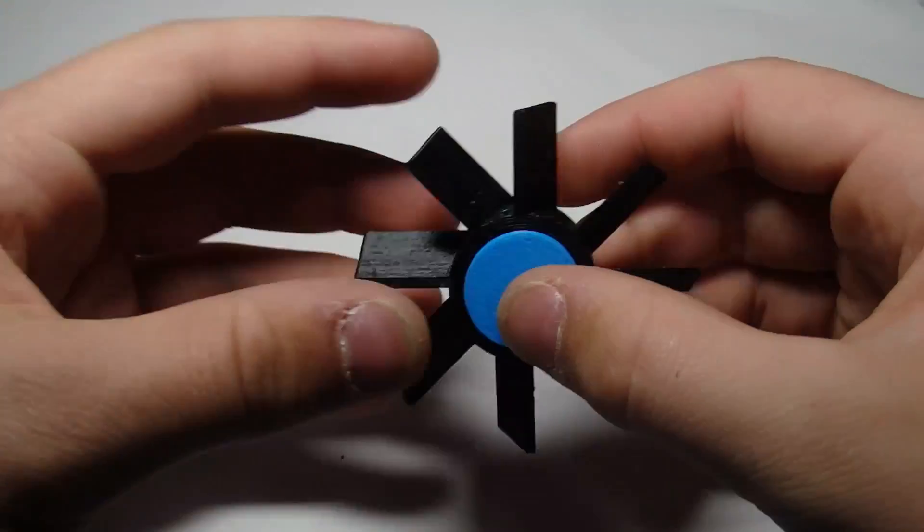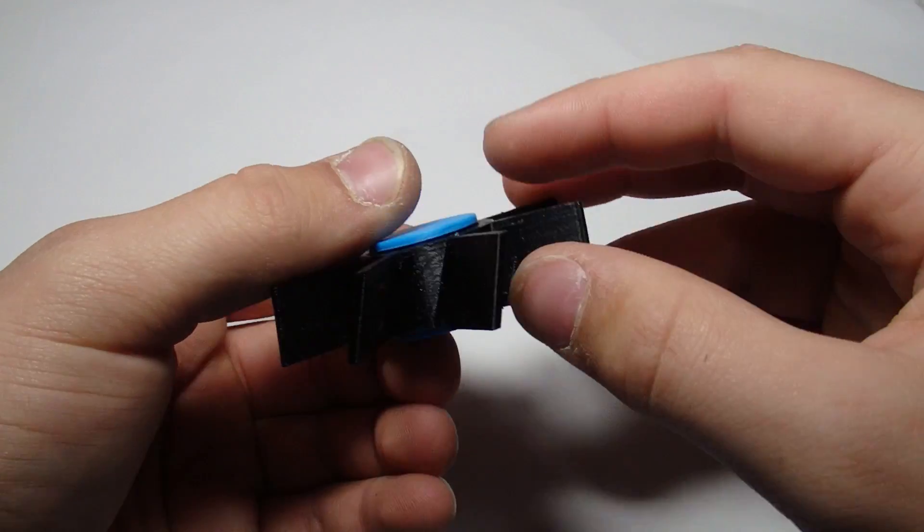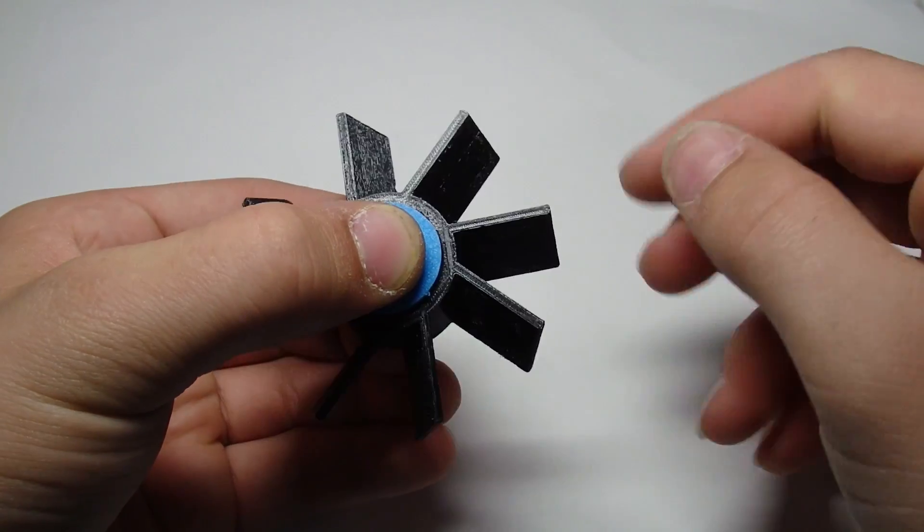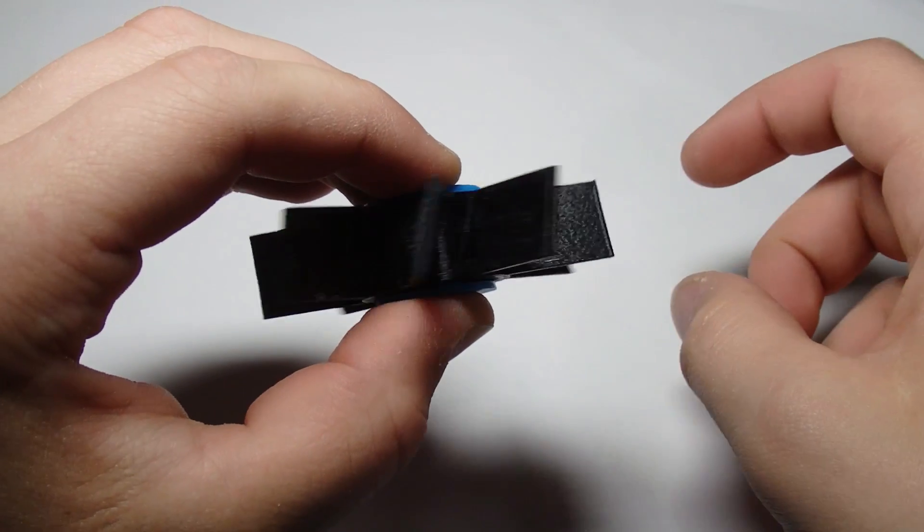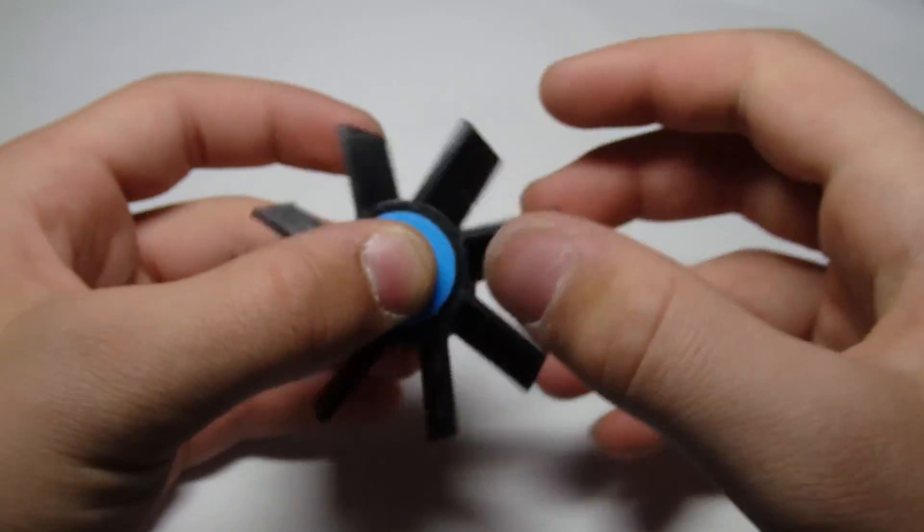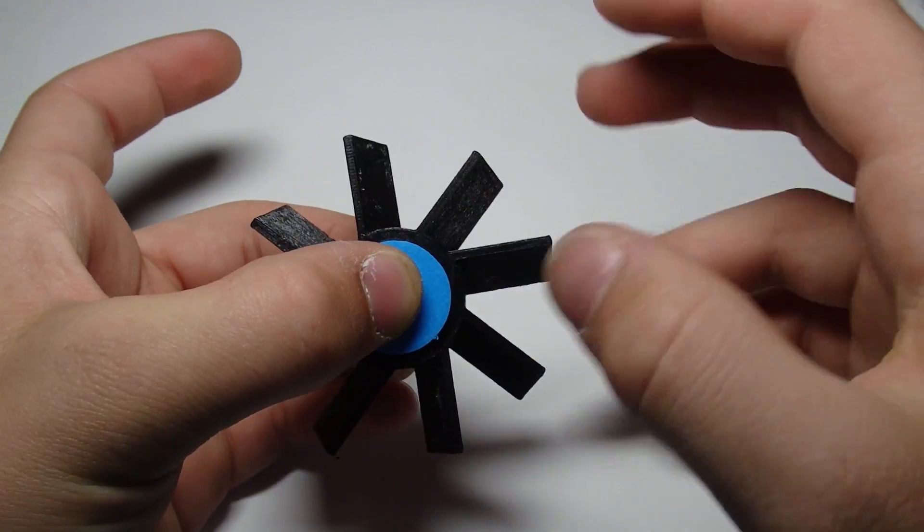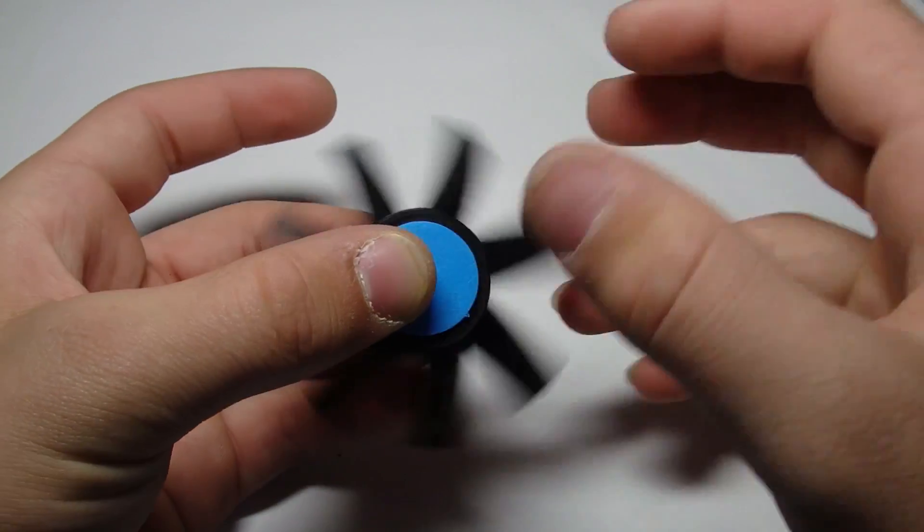So this first fidget spinner is called the fan fidget spinner and it actually works really well. It has one bearing in the middle but it's about two bearings thick, so 14 millimeters thick, and it actually spins really well. It doesn't spin for the longest time because it doesn't have any weights on it, but it does blow a good amount of air and it definitely can cool you off.